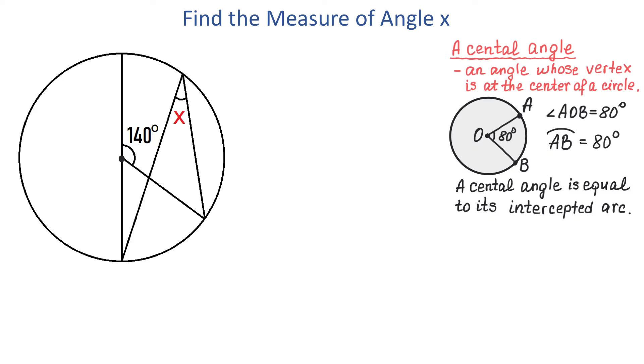Now in the circle to the left we have one given angle of 140 degrees. Then the measure of this angle will be 40 degrees because these two angles are supplementary angles. Then this angle is a central angle because the vertex is at the center of the circle and now we can say that the intercepted arc is also 40 degrees.